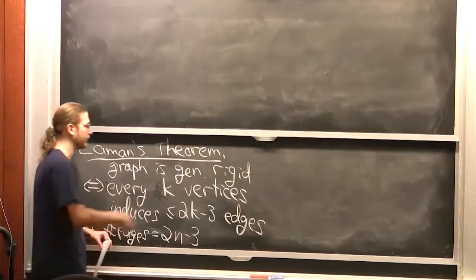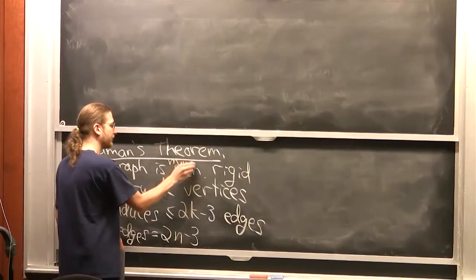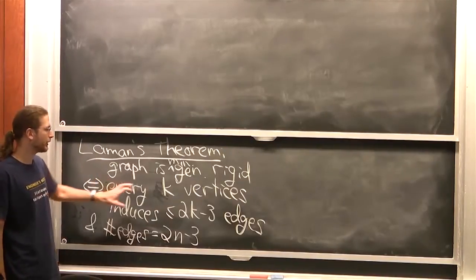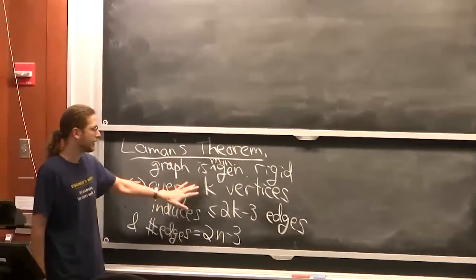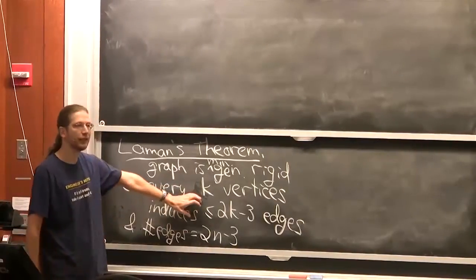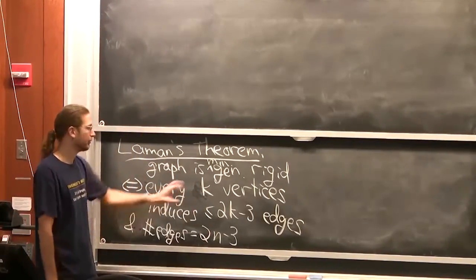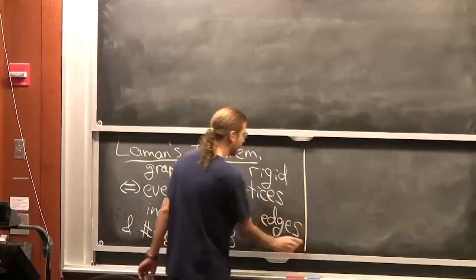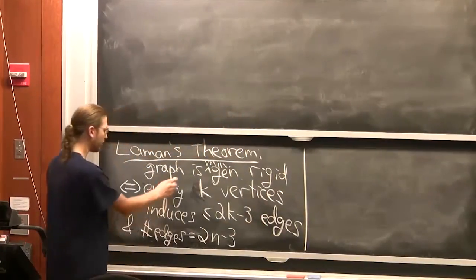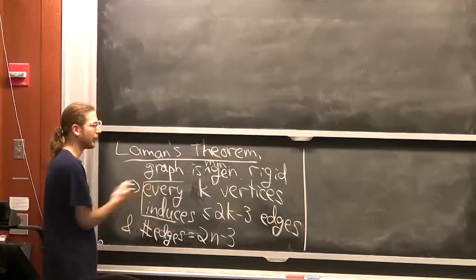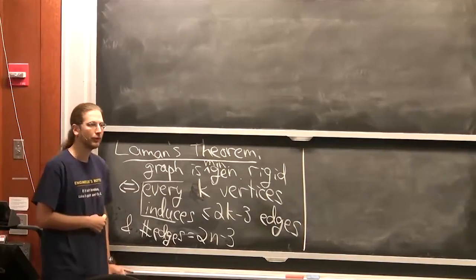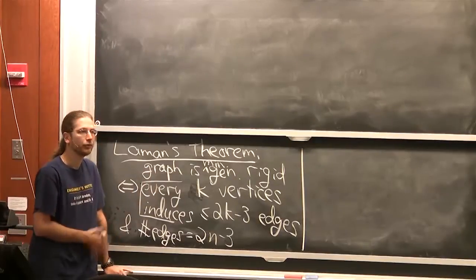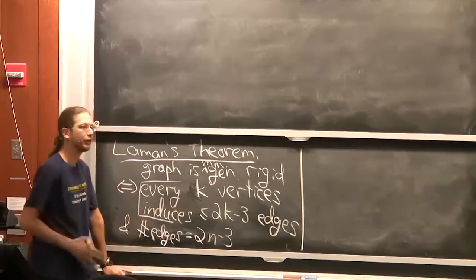To be balanced, you want every k vertices to not have too many edges. If some part had too many edges, there would be too few somewhere else — that part would be overbraced, another part underbraced, and you'd be flexible. That's the intuition.